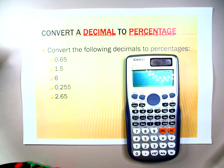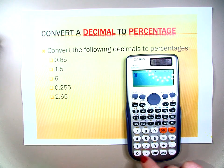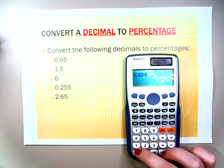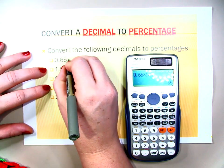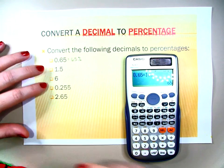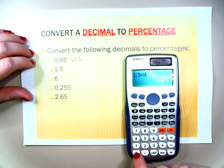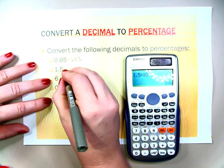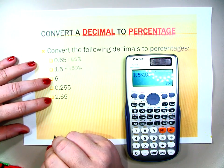The last thing we're going to do is converting decimals to percentages. To convert a decimal into a percentage, all you need to do is multiply by 100. So 0.65 times 100 is 65 — put the percentage sign and you have 65%. And 1.5 times 100 is 150%.